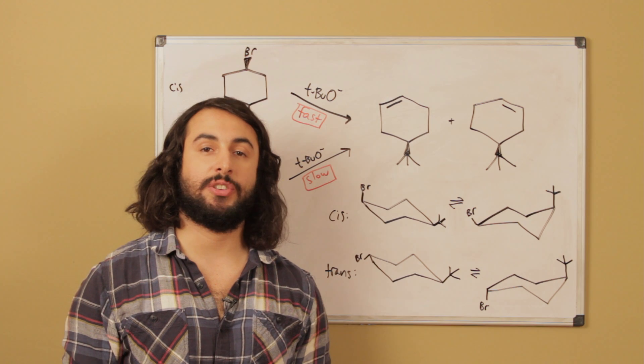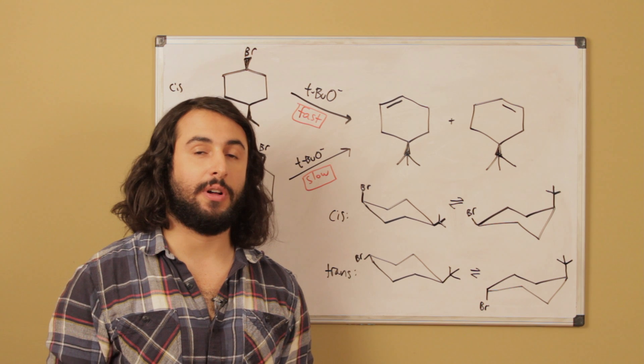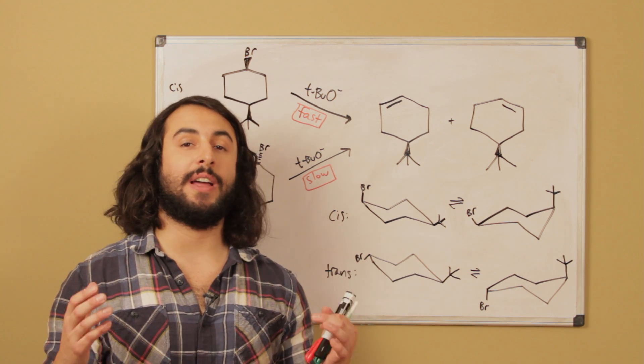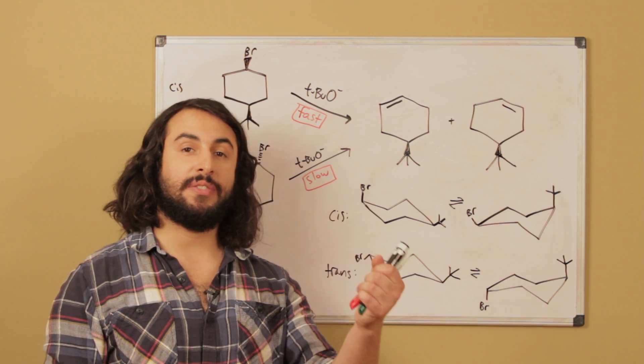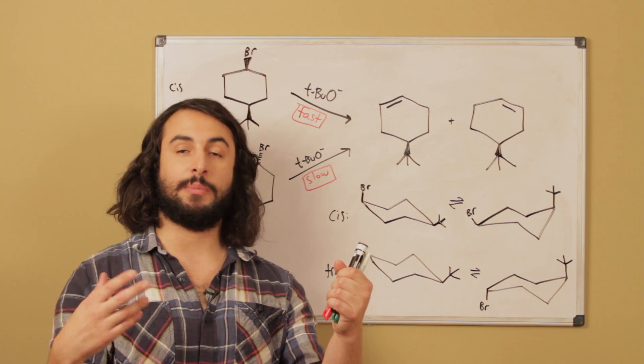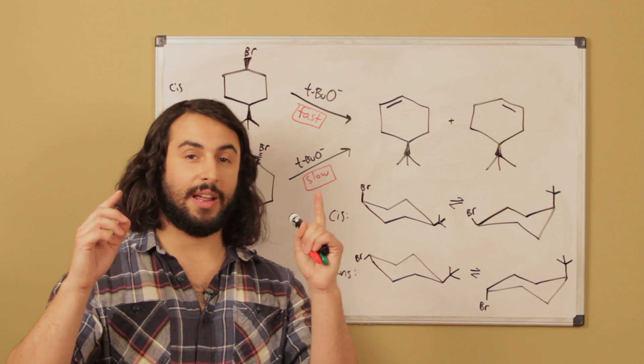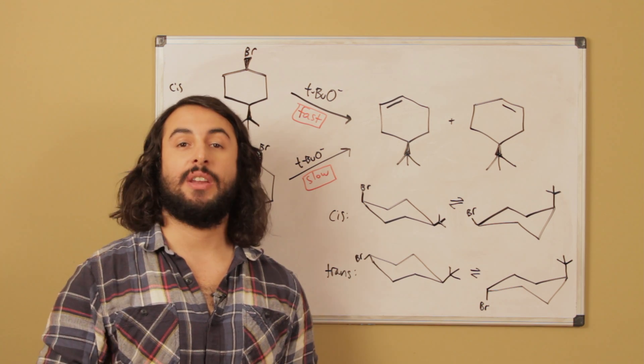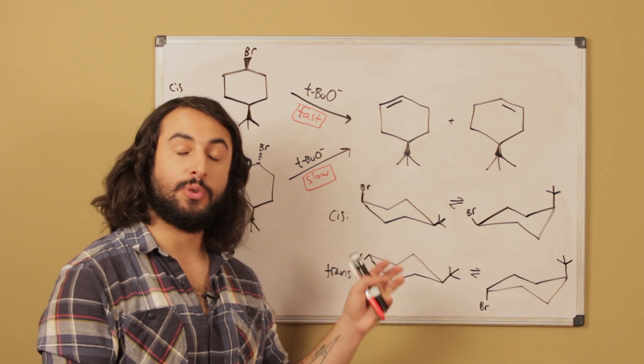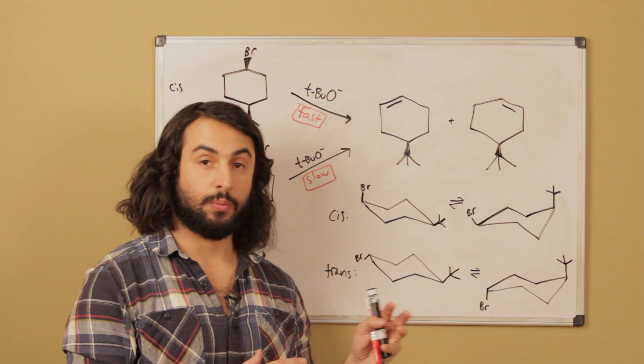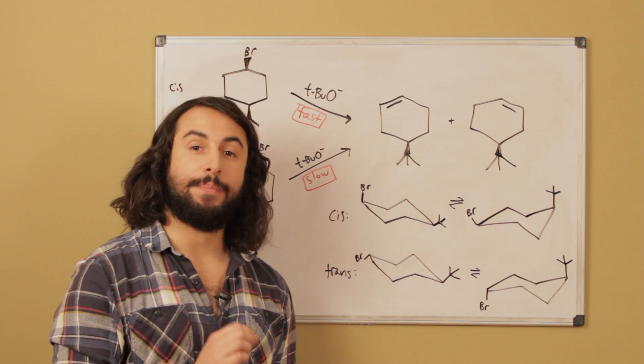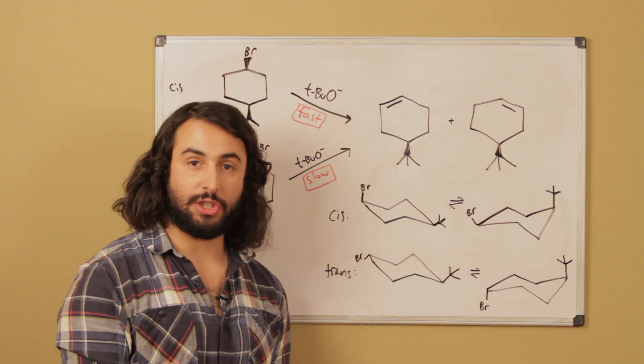To answer this question, there are two key points that we have to recall. The first is that in order for an elimination to occur, the leaving group and the proton - the beta proton being extracted in the elimination - they must be anti-periplanar. And if we are doing this on a cyclic system.